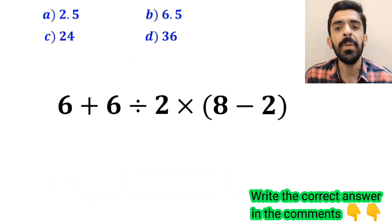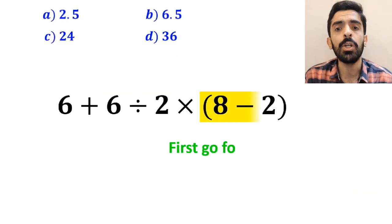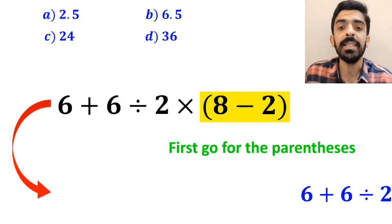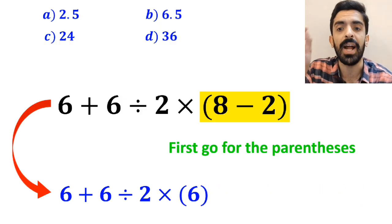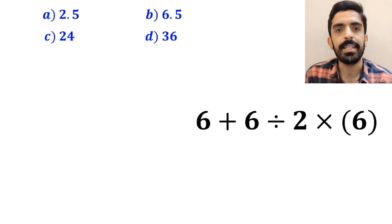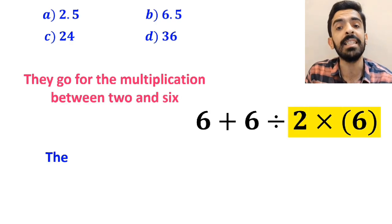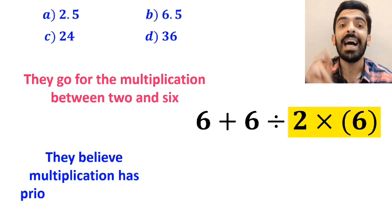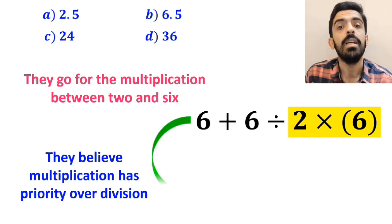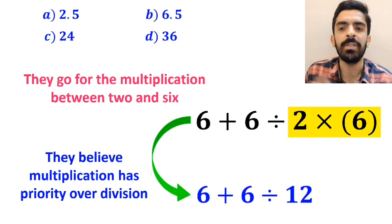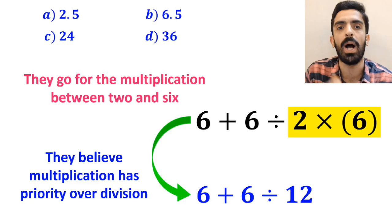Also, some people, when solving this question, first go for the parenthesis, and write this expression as 6 plus 6 divided by 2, then times 6. In the next step, they go for the multiplication between 2 and 6, because they believe multiplication has priority over division. So, this expression simplifies to 6 plus 6 divided by 12.